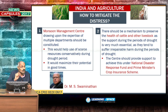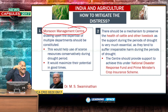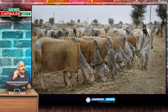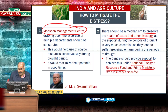To mitigate distress, Dr. M. S. Swaminathan recommended the establishment of a Monsoon Management Center, which would maximize yield in good monsoon years and help conserve scarce resources during drought periods. There would also be a mechanism to preserve the health of cattle and other livestock, which are worst affected in times of agrarian distress. The center should support through the National Disaster Response Fund and the Prime Minister's crop insurance scheme.